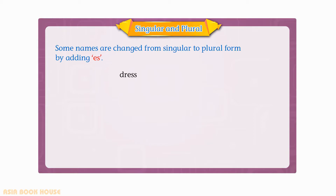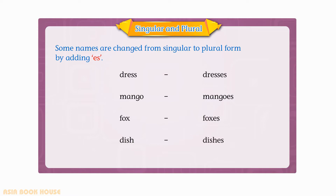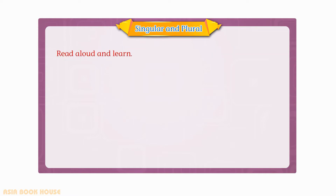Some names are changed from singular to plural form by adding es. Dress, dresses. Mango, mangoes. Fox, foxes. Dish, dishes.